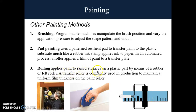Rolling applies paint to raised surfaces on a plastic part by means of a rubber or felt roller. A transfer roller is commonly used in production to maintain a uniform film thickness on the paint roller, and the paint viscosity must be high enough to prevent running. For pad painting, a patterned resilient pad is used to transfer paint to the plastic substrate, much like a rubber ink stamp applies ink to paper. In an automated process, a roller applies a film of paint to a transfer plate, and the patterned pad with raised figures is first pressed onto the film of paint and then onto the plastic part being decorated.